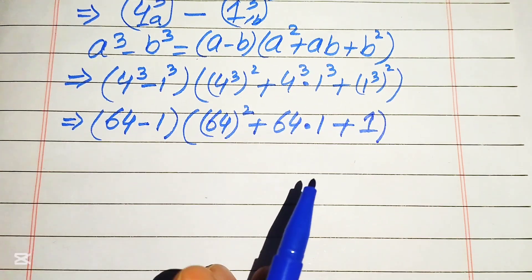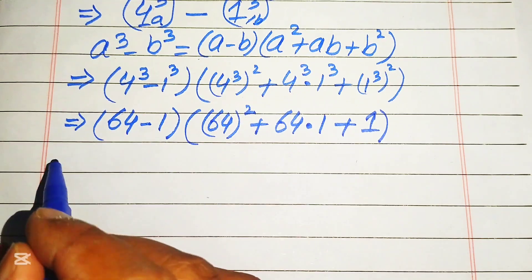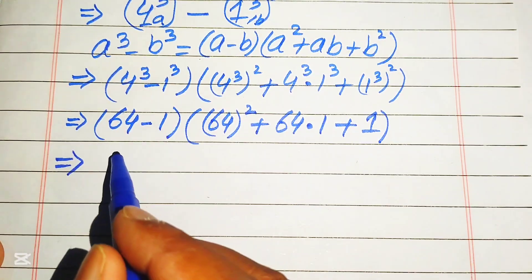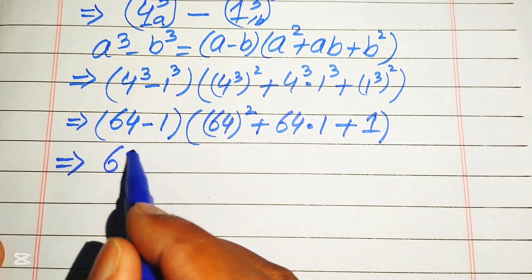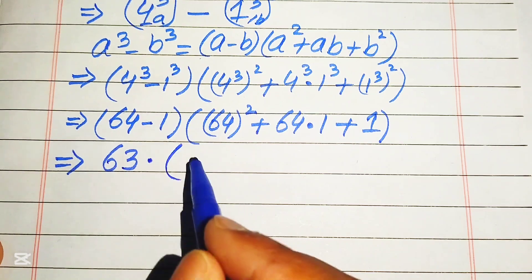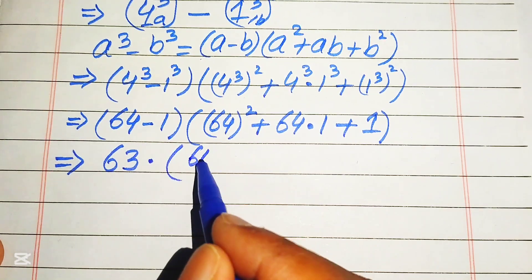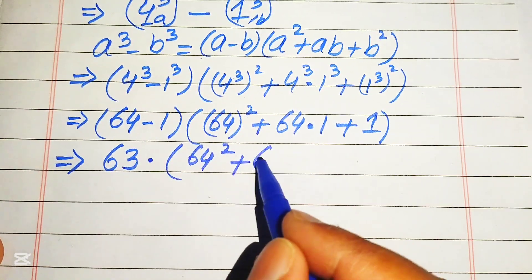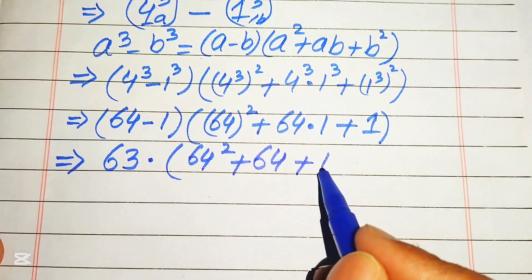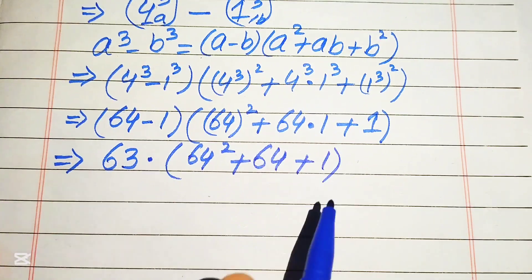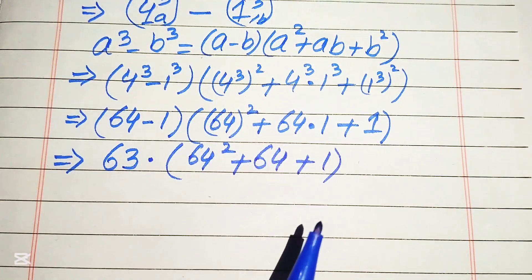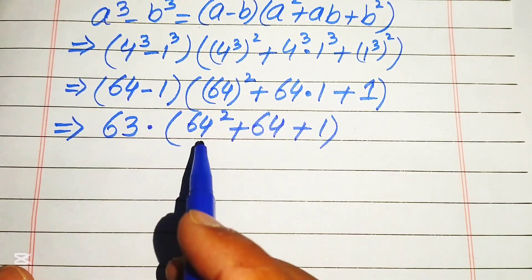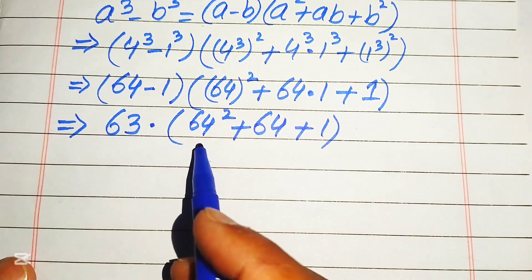So now 64 minus 1 becomes 63, multiplied by 64 squared plus 64 times 1 which is 64, plus 1. We need to focus on computing 64 squared.